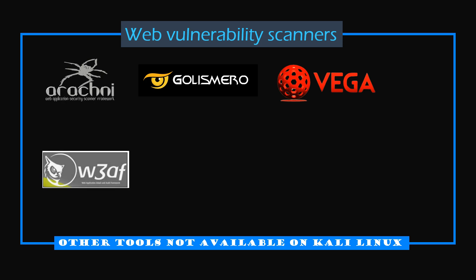W3AF is a comprehensive Python testing platform featuring both a graphical user interface (GUI) and a command-line interface (CLI). It conducts vulnerability scans after mapping the target website and may integrate with the Metasploit framework in the future. OWASP WebScarab is a Java framework primarily used for analyzing HTTP and HTTPS protocols. It functions as an intercepting proxy, fuzzer, and basic scanner, aiding in security testing and protocol analysis.